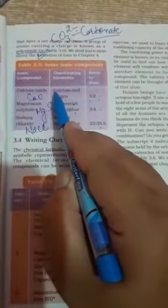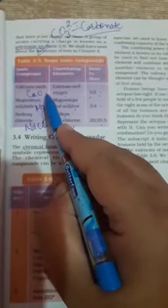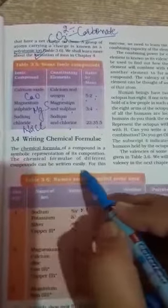For example, calcium oxide contains two elements, calcium and oxygen, and its symbolic representation is CaO. So the chemical formula of different compounds can be written easily.